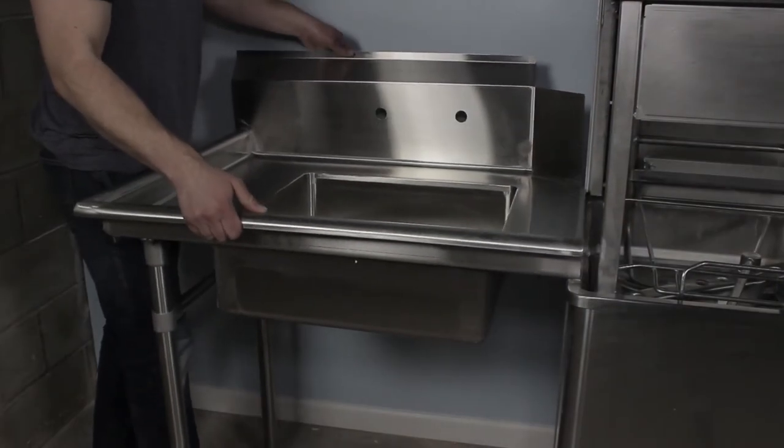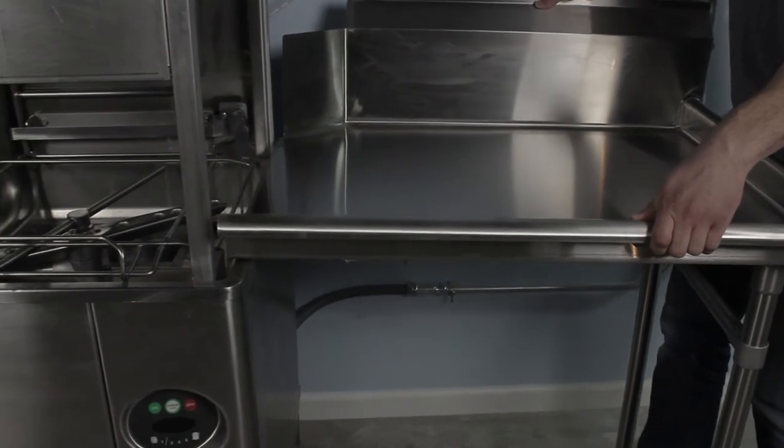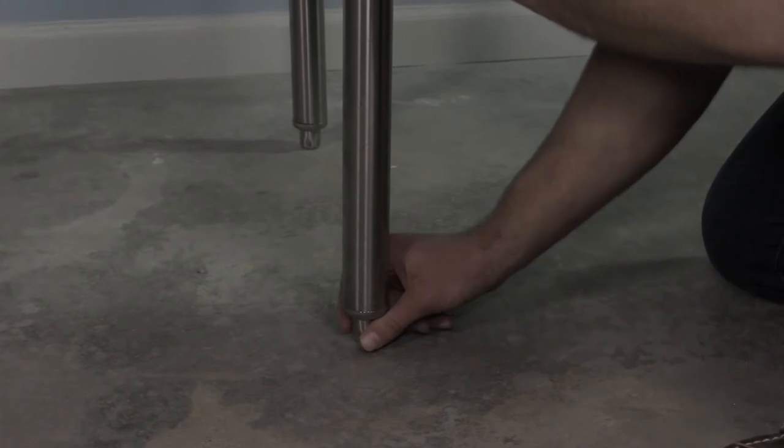Then you want to attach the clean and soiled dish table on either side. Attach by placing a lip over the side of the dishwasher, and again here, level using the threaded legs at the bottom.